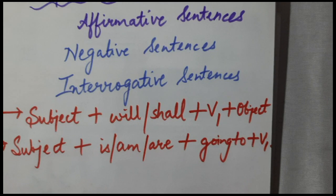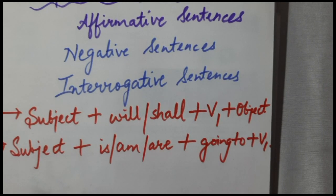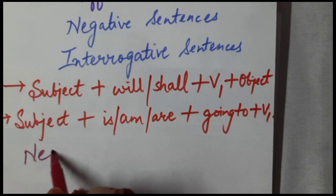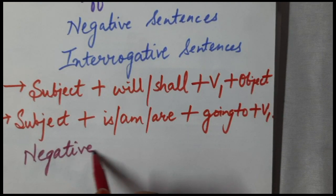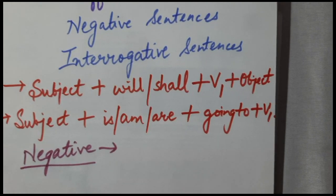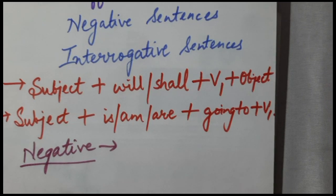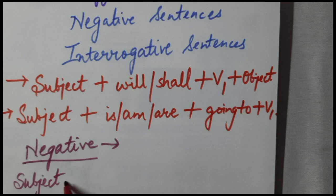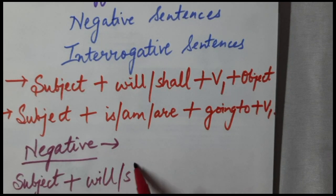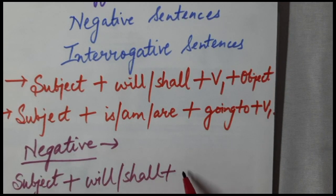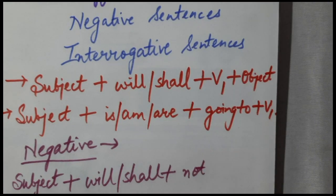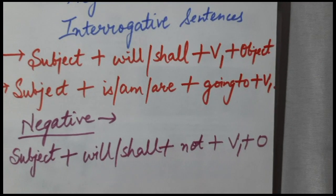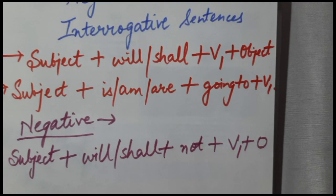Now let us learn how this rule changes when we want to talk about negative sentences. It is very simple — just like for any other tense, we will have our helping verb and we will put 'not' after our helping verb to change them into negative sentences.